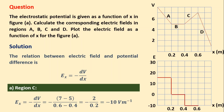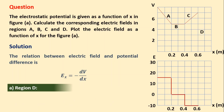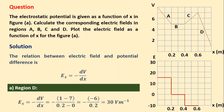There is a flip again. Let us work out for region D. In this region, the voltage goes from 7 volts to 1 volt. So dV is the final voltage 1 minus the initial voltage 7, giving minus 6. So E_x equals minus dV by dx — substituting minus 6 for dV and 0.8 minus 0.6, which is 0.2, for dx — the final answer is 30 volts per meter, represented in the E versus x graph at 30 volts per meter.